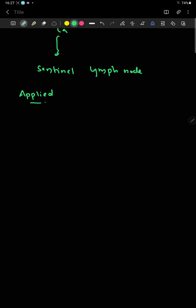Now discussing some applied anatomy. Mastectomy is the medical term for removing one or both breasts, partially or completely, and is done to treat breast cancer. Lumpectomy refers to the removal of only the tumor itself.